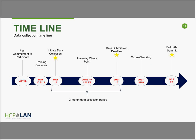This is the timeline for this year's measurement effort. Commitments to participate were made over the past six weeks. Data collection began on May 15th. We have a midpoint check-in on June 19th, and data collection ends on July 15th — a two-month data collection period. After that, my team will review the data and present results at the Fall LAN Summit on October 22nd. If you're able to make it to D.C. for that event, it's a great way to network with colleagues and hear the latest insights from the field.